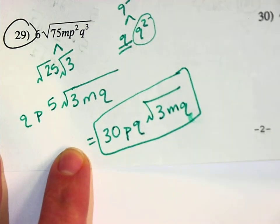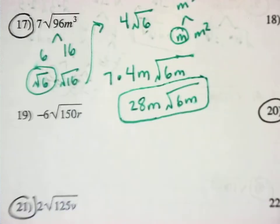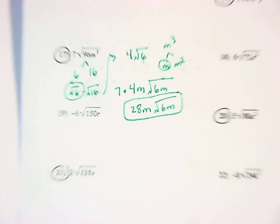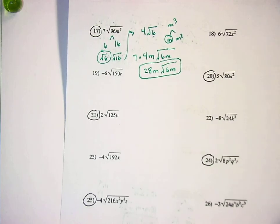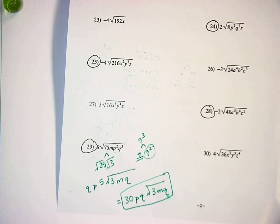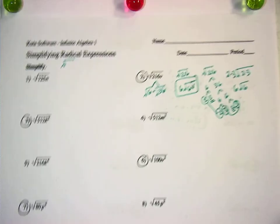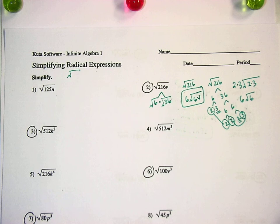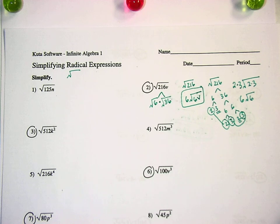Hopefully this is a review from last year, but if not, we just talked about how to simplify radicals — how to simplify square roots. You break them down as far as you can and look for perfect squares, even with variables. Now it's your job to do the rest of the circled problems. Remember, this assignment and the one from yesterday — page 92, numbers 12 through 48, multiples of four — both are due on Friday. Bye!